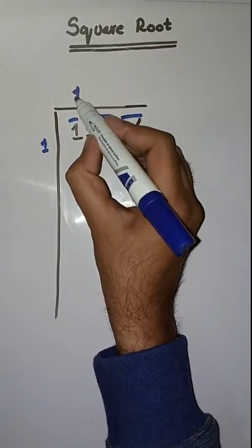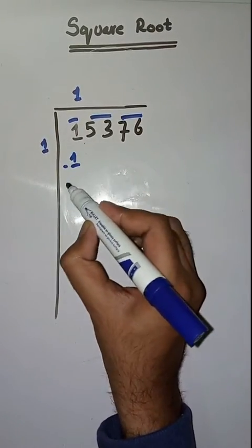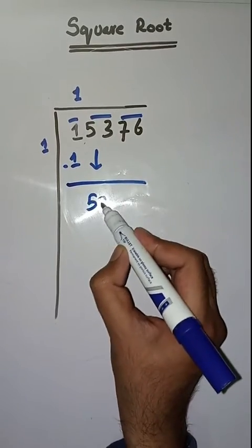1 times 1 is 1. We subtract and get 0. Next pair is 53, we bring it down.